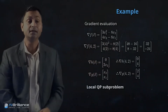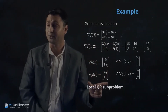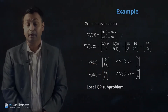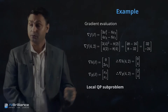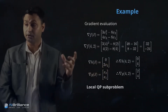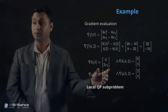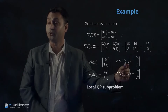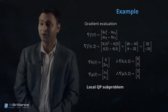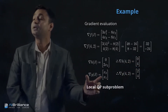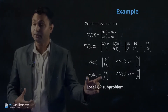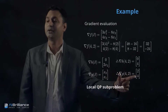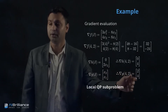We also compute the gradient of the equality and inequality constraints. Taking the derivative of the equality constraint with respect to x1 gives 0, and with respect to x2 gives 2x. Evaluating at (4,2) gives the vector [0, 4]. For the inequality constraint, taking derivatives with respect to x1 and x2 gives x2 and x1 respectively, and evaluating at (4,2) gives [2, 4].